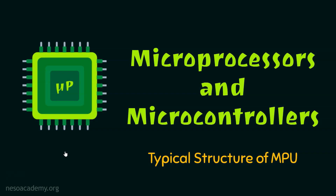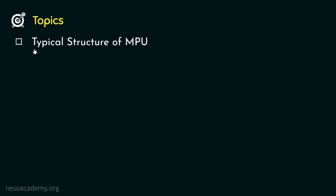Hello everyone and welcome back. Till the last session we have covered the pin diagram of the 8085 microprocessor. In this session we are going to learn about the typical structure of the microprocessing unit. Today we are going to learn about the typical structure of the microprocessing unit or MPU, alongside we will compare the pins of the 8085 microprocessor.